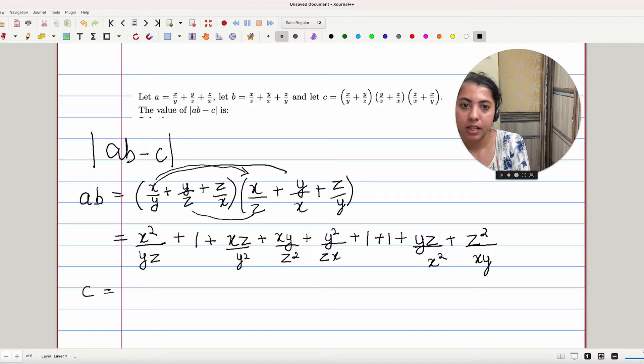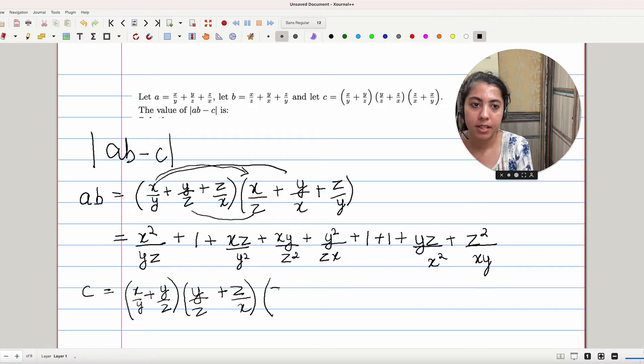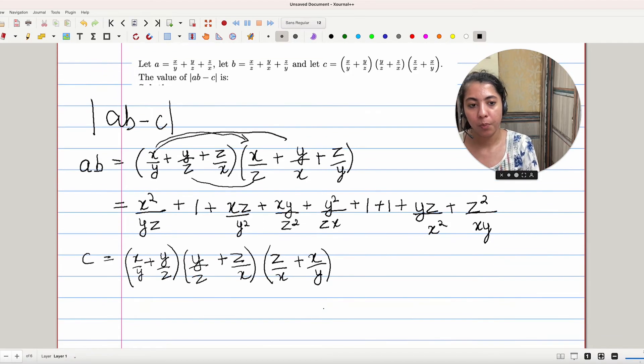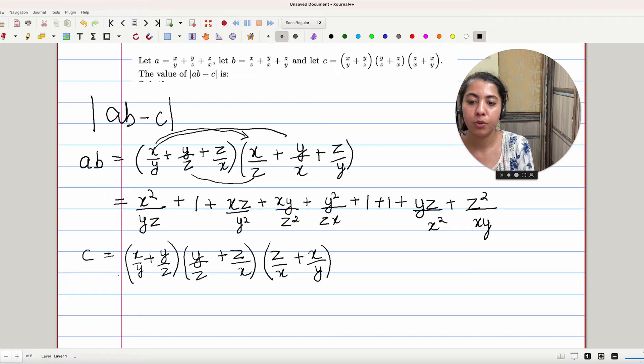C is equal to (X/Y + Y/Z) times (Y/Z + Z/X) times (Z/X + X/Y). Let's first open the two brackets, the first two brackets.